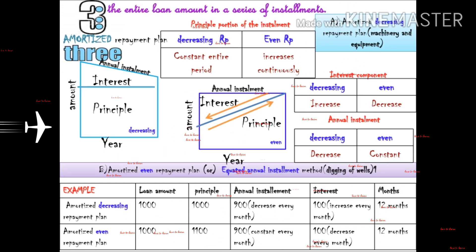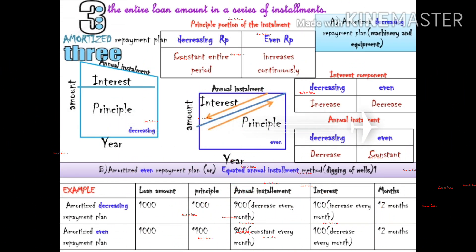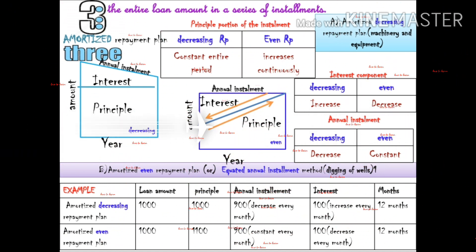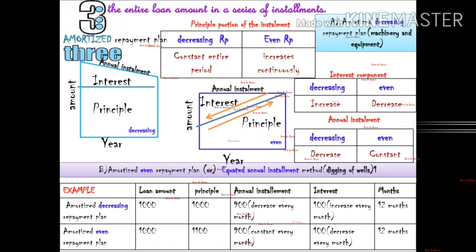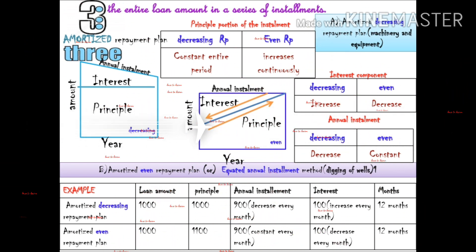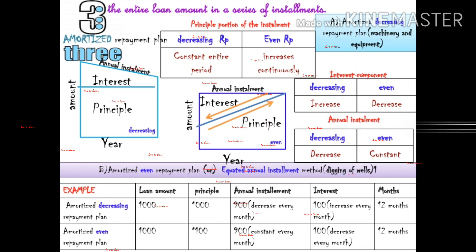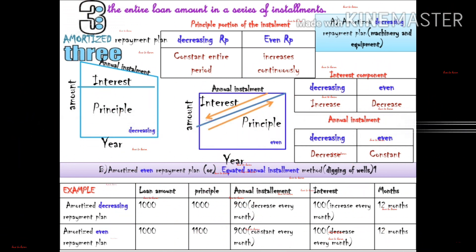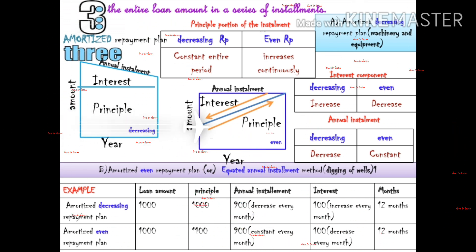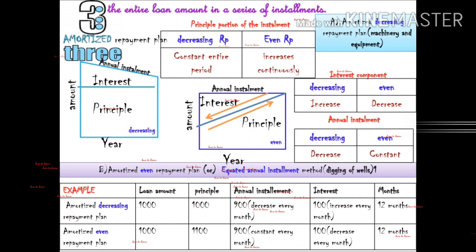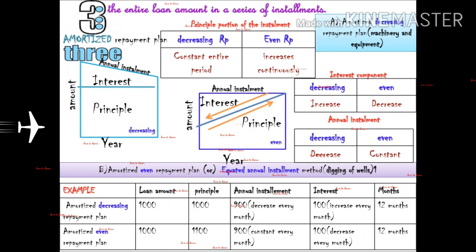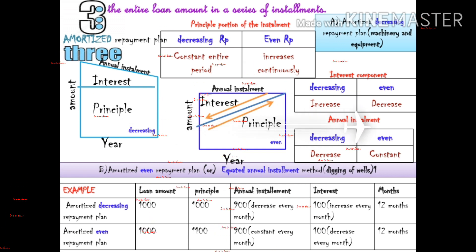The maturity year is called the final year, during which the investment generates sufficient revenue. The third type is the amortized repayment plan. In this plan, the entire loan amount is repaid in equal installments. There are two subtypes: the amortized decreasing repayment plan and the amortized even repayment plan. It is suitable if you have any machinery or equipment.